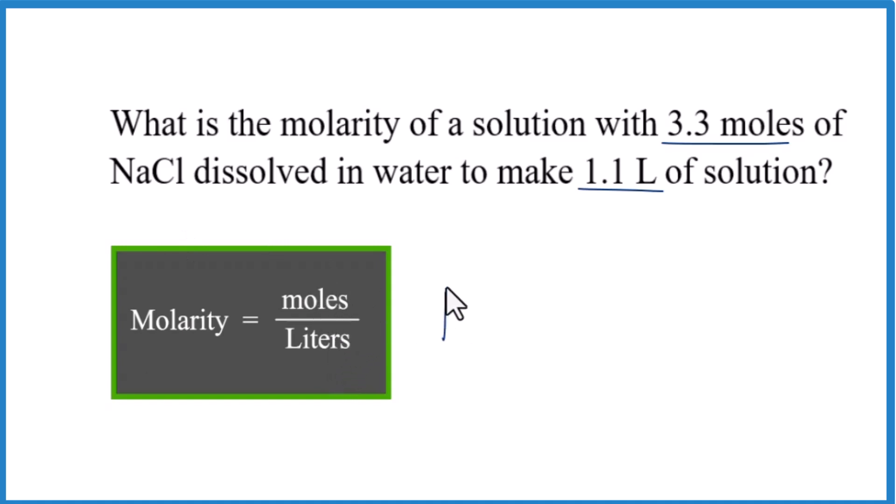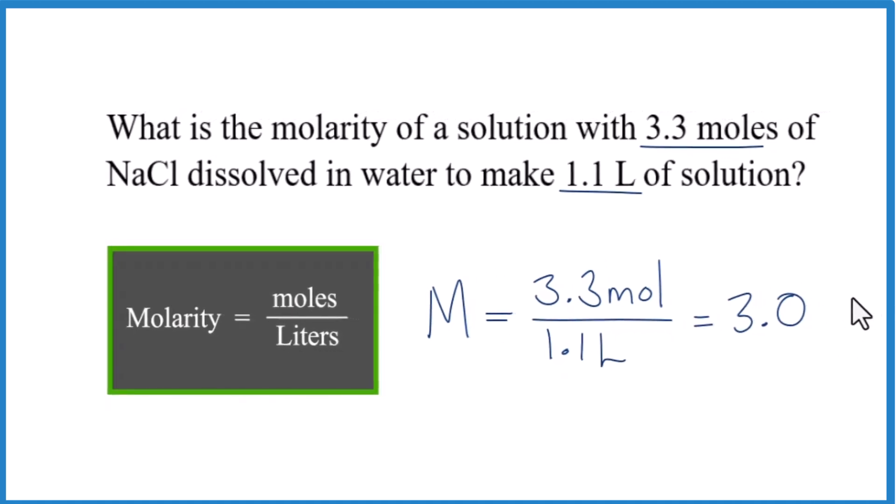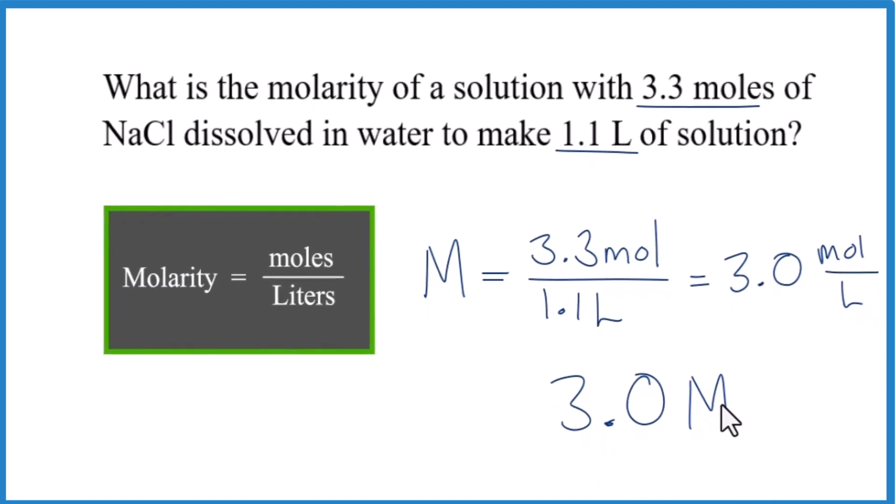So big M, that's what we use for molarity, equals 3.3 moles all over 1.1 liter. So now we just divide. 3.3 divided by 1.1, that equals 3.0 moles per liter. Those are the units. And we can just write this as 3.0 M. And we would say 3.0 molar. It's a 3.0 molar solution.